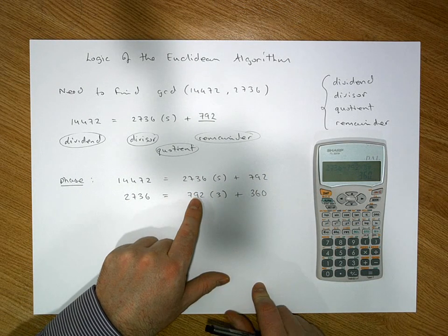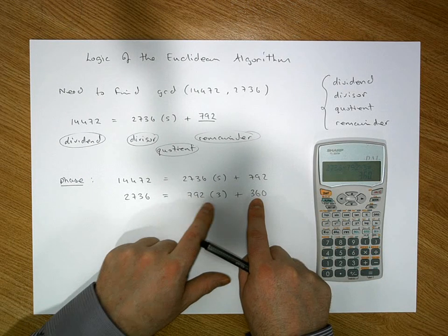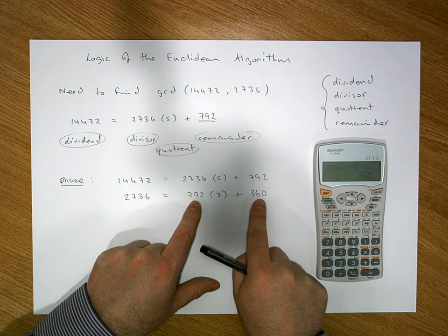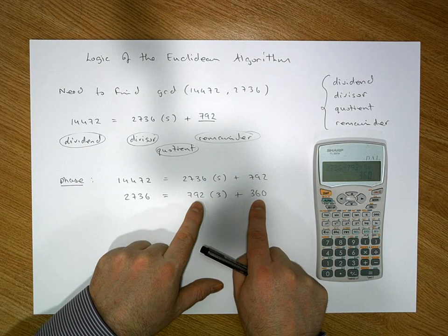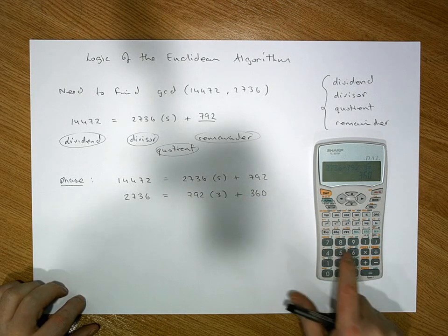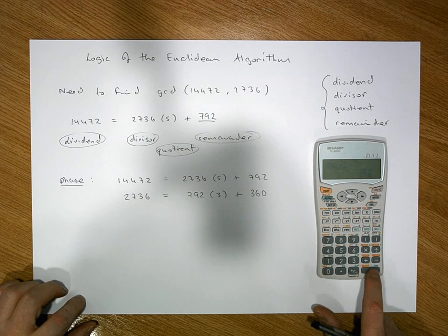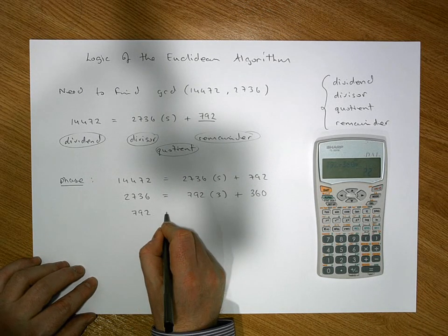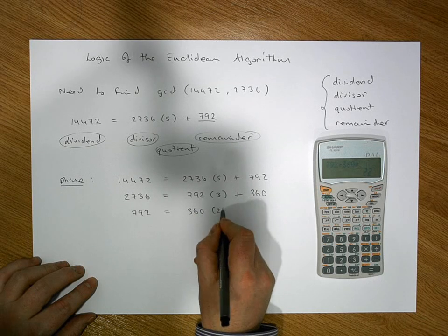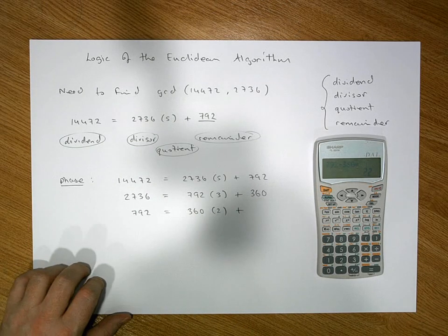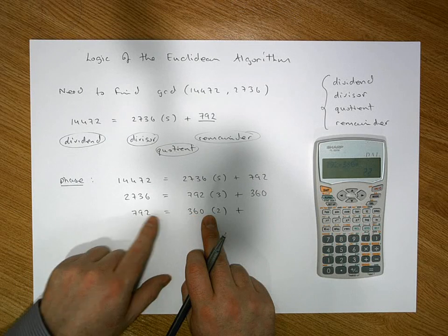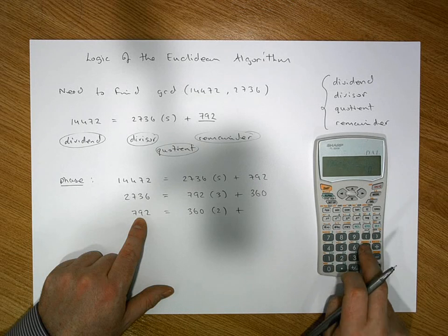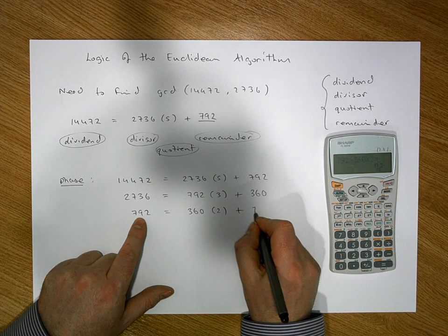We take the divisor and the remainder from the last round and apply the division algorithm again. How many times does 360 divide into 792? It goes in about 2.2 times, so it goes in two whole times. We know that 792 must equal 360 times 2 plus some remainder. The remainder is 792 minus 360 times 2, which gives us a remainder of 72.